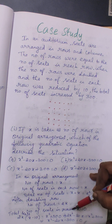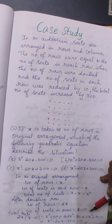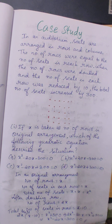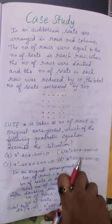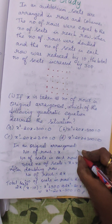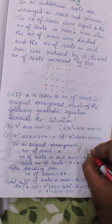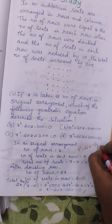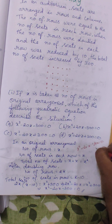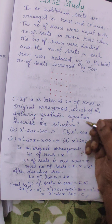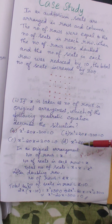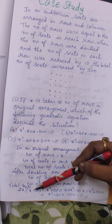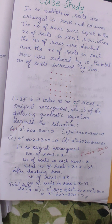Multiplying out, we get 2x squared minus 20x equals x squared plus 300. Transposing terms: 2x squared minus x squared minus 20x minus 300 equals 0, which gives x squared minus 20x minus 300 equals 0. This is the quadratic equation describing the given scenario, so option A is the correct answer.